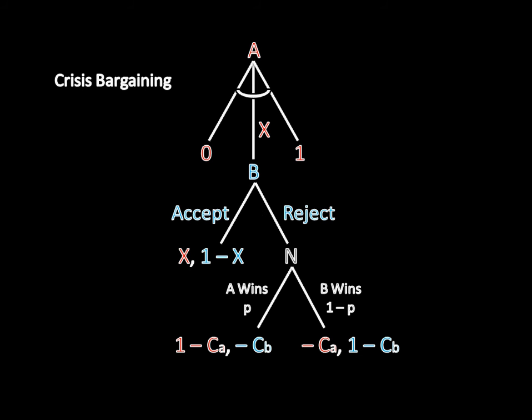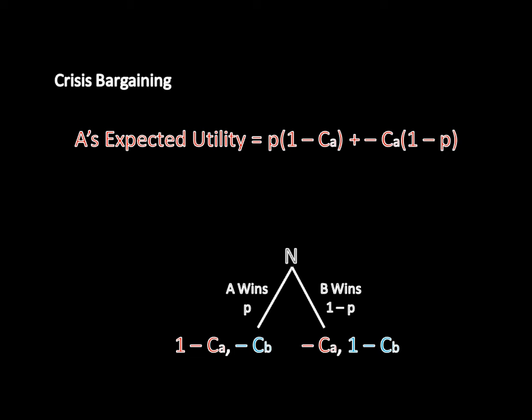So how do A and B resolve this issue? Well, game theory has a nice trick you can use here. If nature is the last actor to make a move in a game, you can simply calculate the expected outcome of nature's move, then eliminate nature from the game. What does that mean?